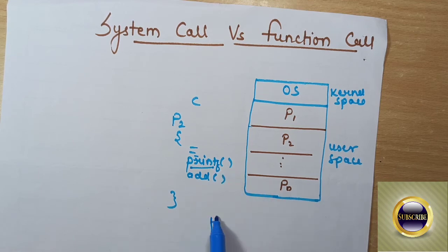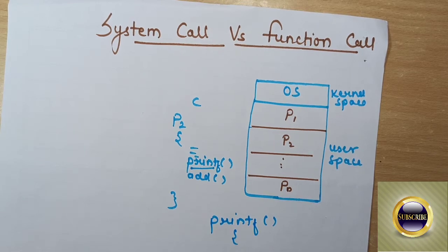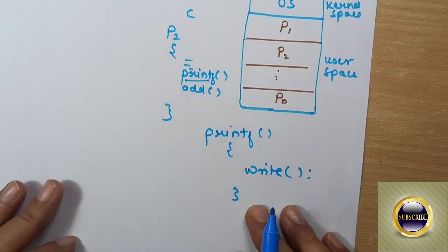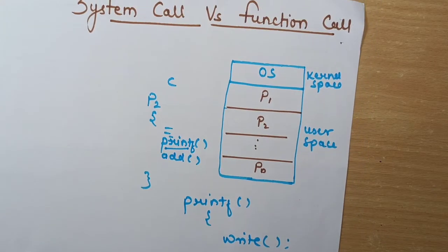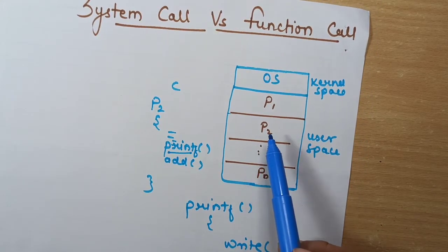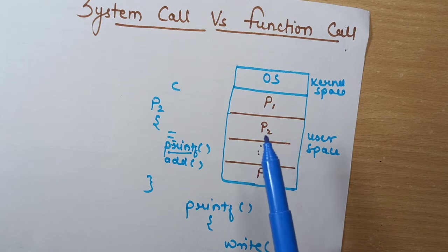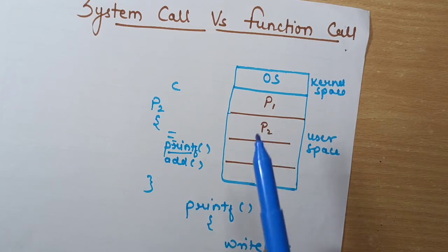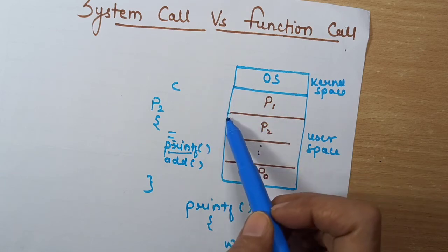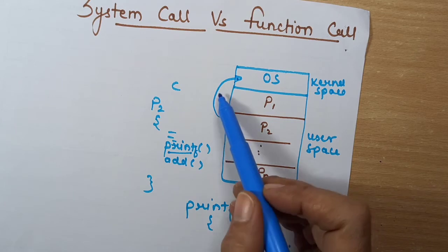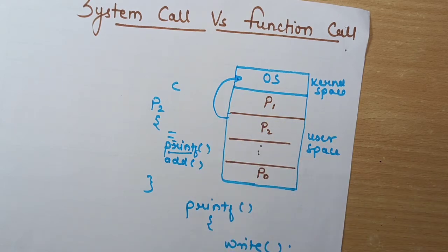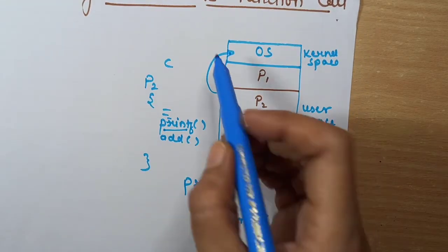Inside the C library, printf passes the argument to be printed. How is printf defined inside the C library? It will call another function — maybe the write function — because whenever any process wants something to be executed, like reading a file from disk or writing something to the monitor, which is an IO device, it needs to ask the OS first. For asking that permission it needs special functions, and those functions are known as system calls.